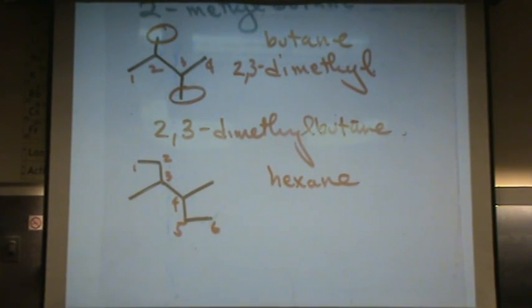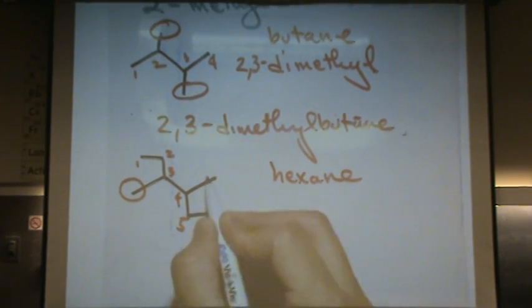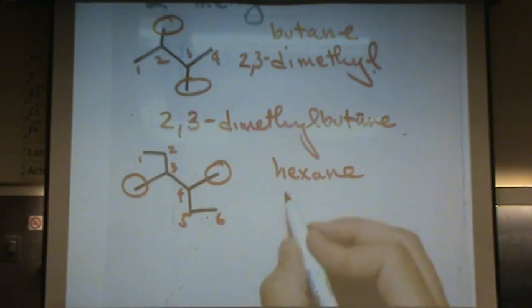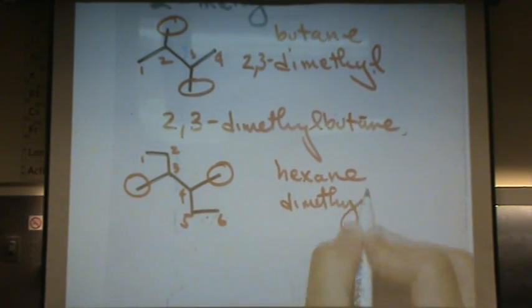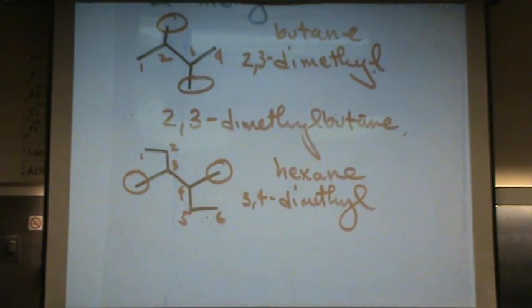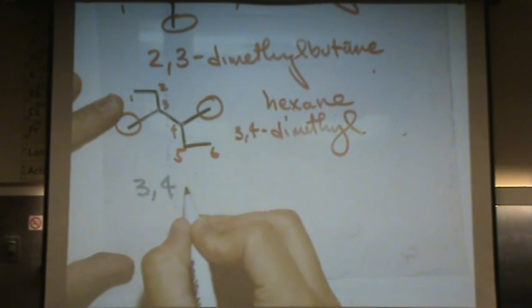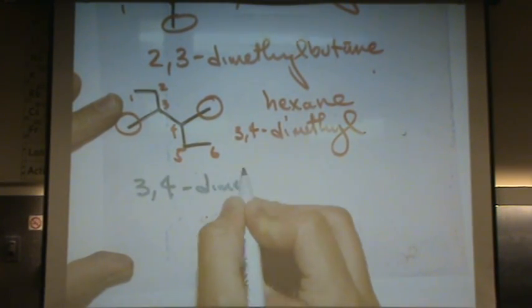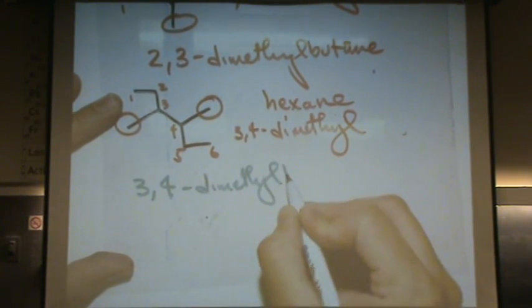What are the branches? Right here. It's a dimethyl again. Dimethyl. And they're in the three and the four position. Is that my lowest set of numbers? Yeah, you can't get any lower than that. If you number from the right-hand side, you get one, two, three, four again. So either way, you'll get a three, four. So the whole name would be three, four dimethylhexane.